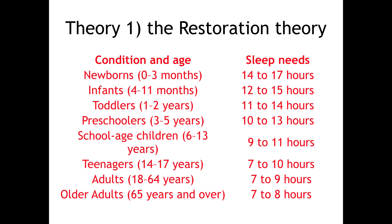Let's have a look at this table, which tells us roughly the sleep needs for different ages. When you're a newborn, 14 to 17 hours per day on average. Infants, 12 to 15 hours, and so on. The older you get, the less sleep you seem to need. And this makes sense according to Oswald's restoration theory, because by the time you're 65 years and over, well you've done all your growing — you don't have anywhere left to grow, you don't need to grow any further. All you need to do is repair. This would tell us something about why we need to sleep — simply to aid physical and mental recovery. This is the restoration theory.